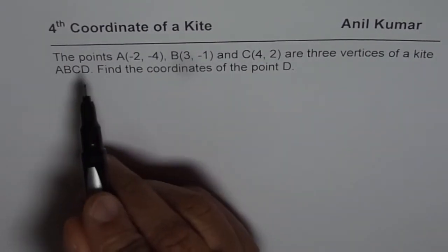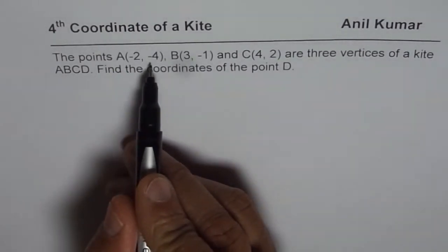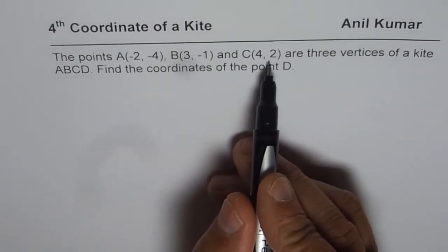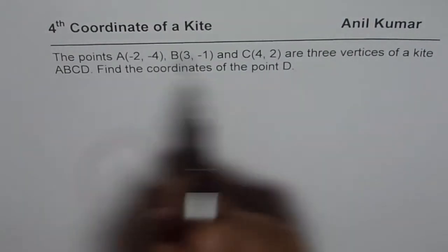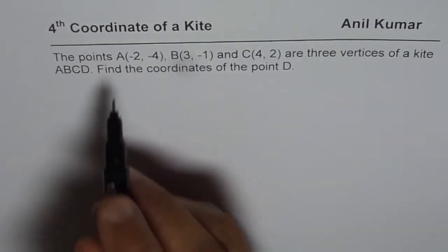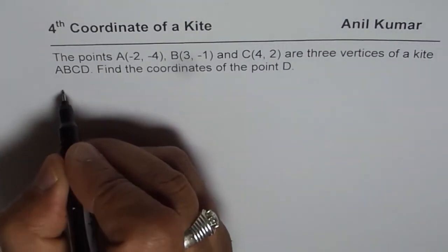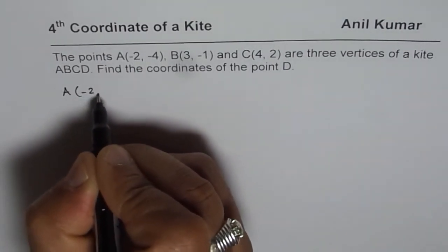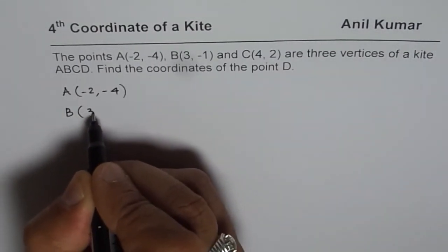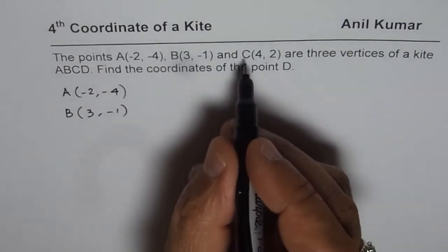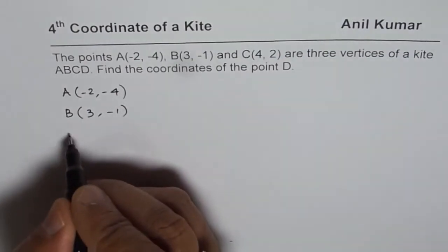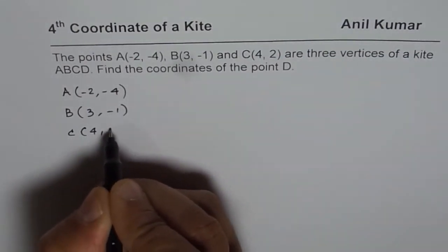The question here is: the points A(-2, -4), B(3, -1), and C(4, 2) are three vertices of a kite ABCD. Find the coordinates of point D. So we are given three points of a kite: A is (-2, -4), B is (3, -1), and C is (4, 2).